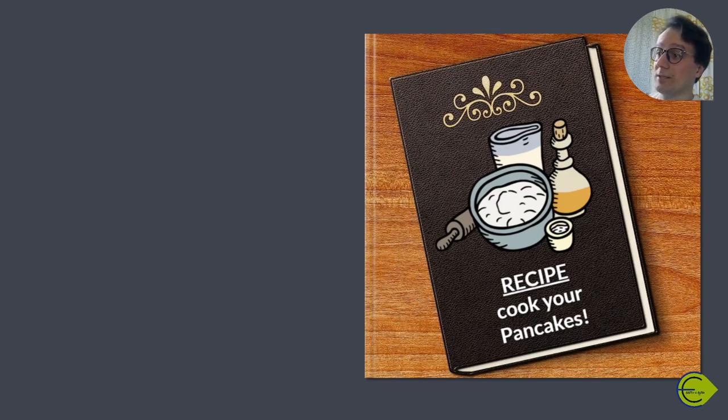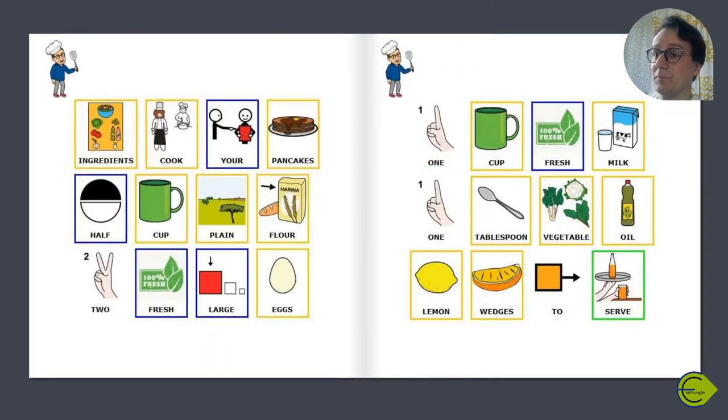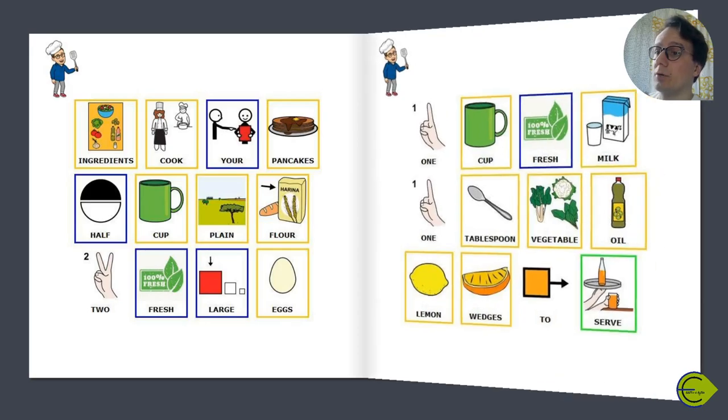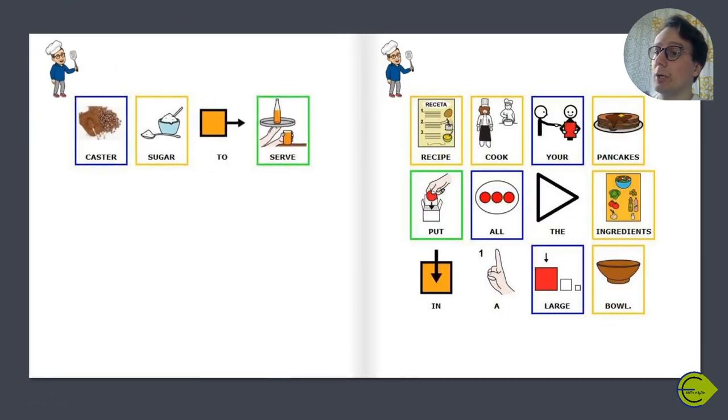Let's see the ingredients to cook your pancakes: half cup plain flour, two fresh large eggs, one cup fresh milk, one tablespoon vegetable oil, lemon wedges to serve, caster sugar to serve. Put all the ingredients in a bowl.